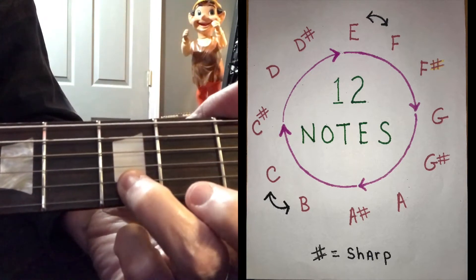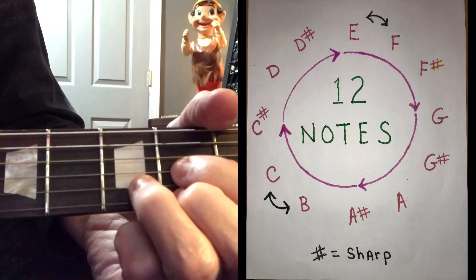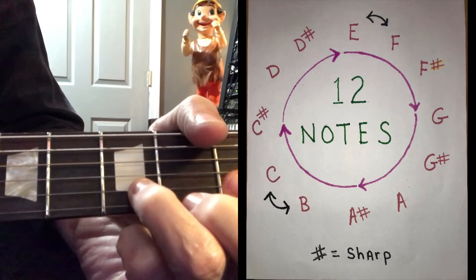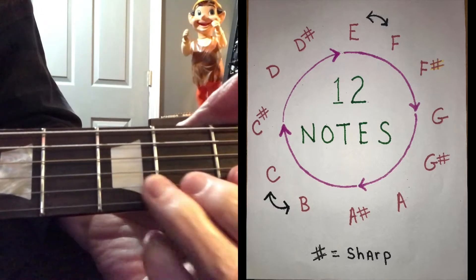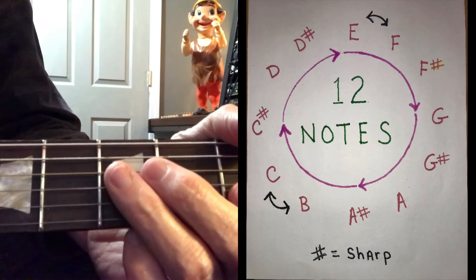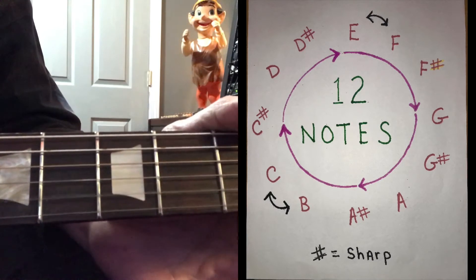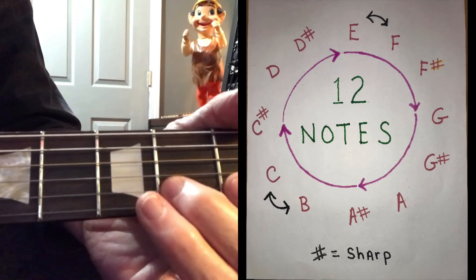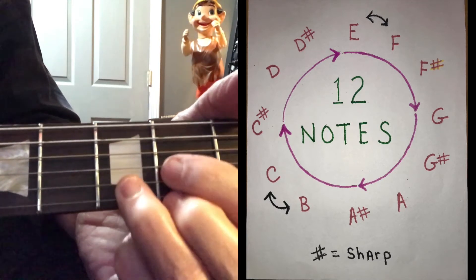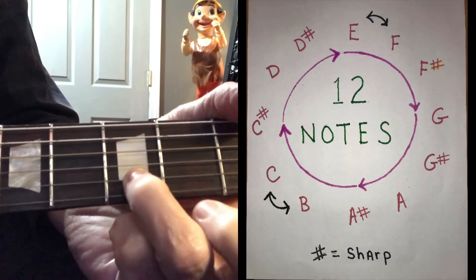On the fourth fret, that's a D chord. And that's called a D because that's a D note. So B, C, C sharp, D. So that's a D chord because that's a D note.